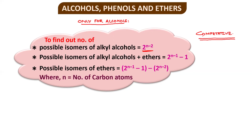To summarize the isomer formulas: if asked for alkyl alcohol isomers, use 2^(n−2). If asked for alkyl alcohols and ethers combined, use 2^(n−1) − 1. If asked for ethers only, use [2^(n−1) − 1] minus 2^(n−2). Remember these formulas apply only to alcohols and ethers — not to aldehydes, ketones, or other functional groups.